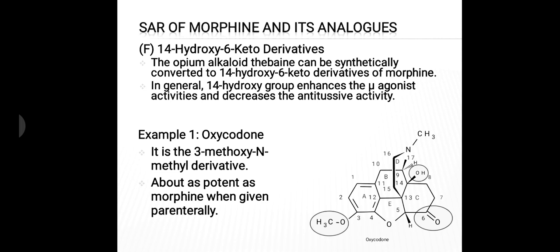The next category is 14-hydroxy-6-keto derivatives. The opium alkaloid thebaine can be synthetically converted into 14-hydroxy-6-keto derivatives of morphine. In general, presence of the 14-hydroxy group enhances mu-receptor agonist activities and decreases antitussive activity. The first example is oxycodone, which has three structural changes: presence of a hydroxyl group at the 14 position, presence of a ketone group at the sixth position instead of an OH group, and presence of a methoxy group at the third position instead of a phenolic hydroxyl group. Oxycodone is about as potent as morphine when given parenterally.